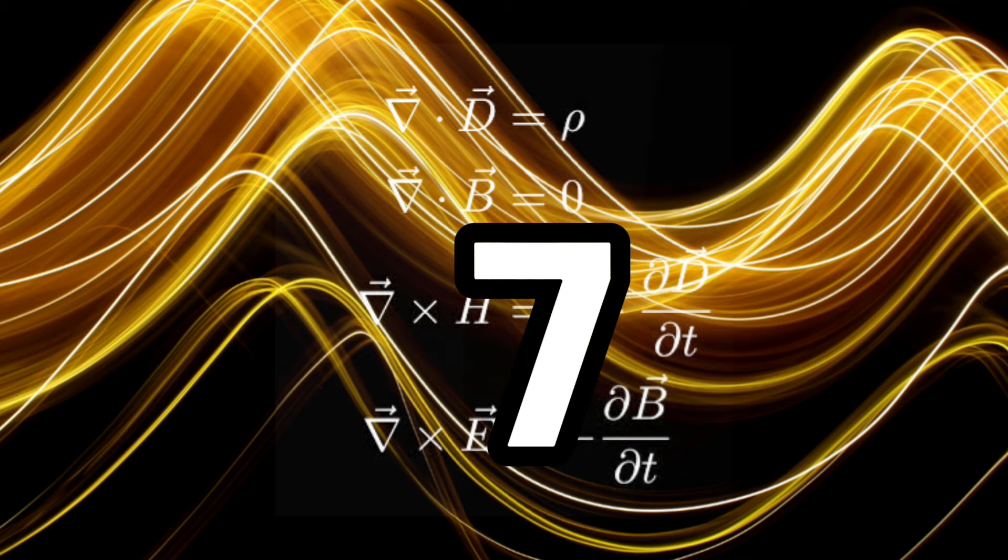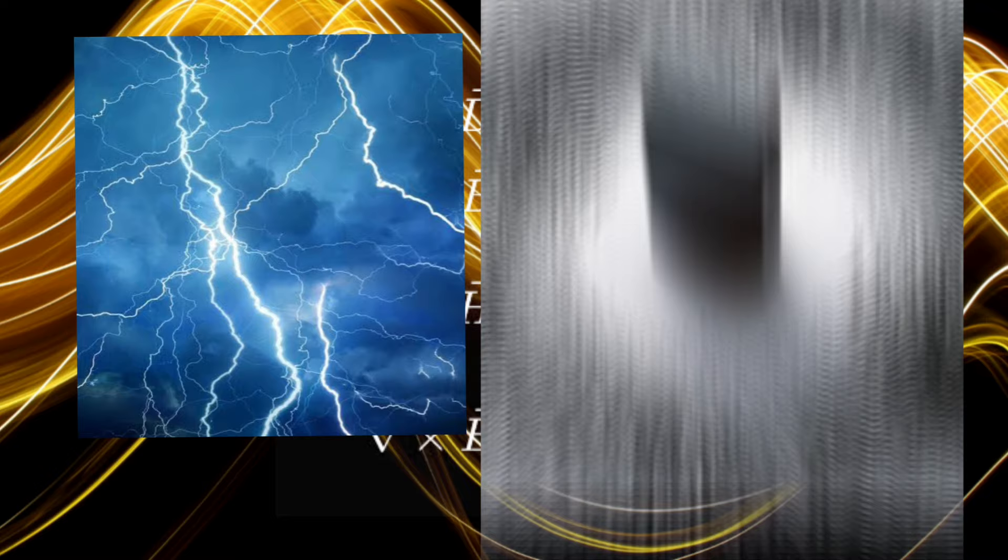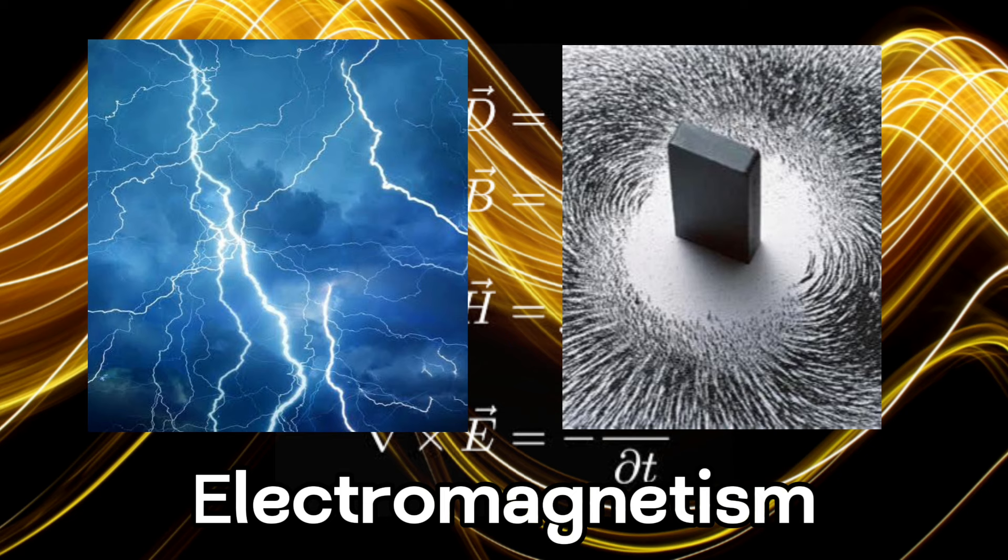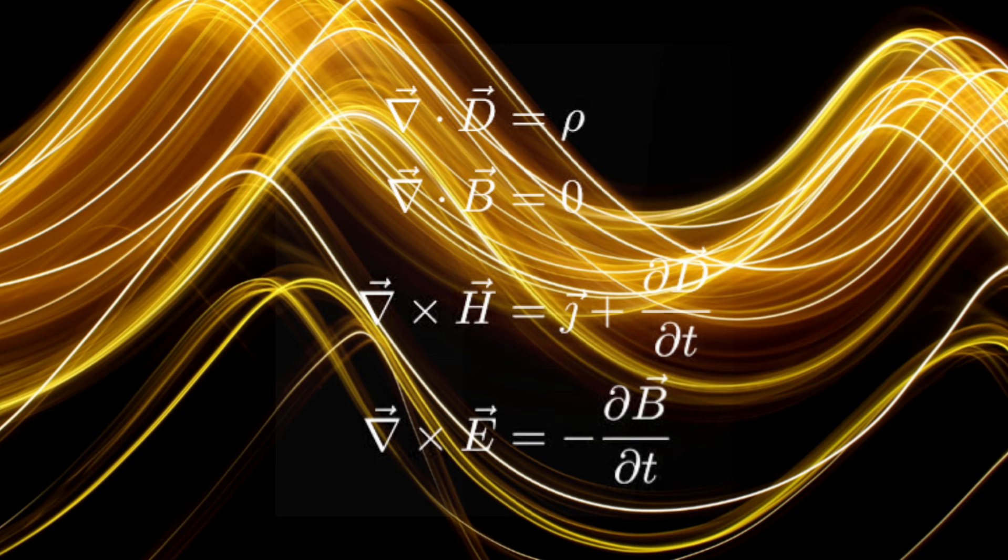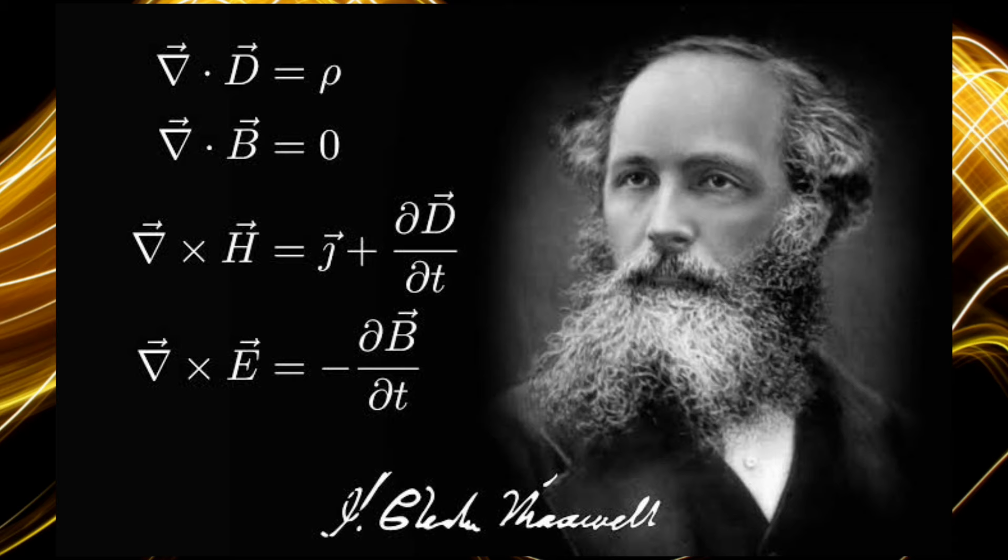7. Maxwell's Equations. Maxwell's most famous achievement was the unification of electricity and magnetism through his set of equations, now known as Maxwell's equations. He formalized the laws of electromagnetism into a coherent mathematical framework, predicting the existence of electromagnetic waves that propagate at the speed of light. This unification marked a profound shift in our understanding of nature, setting the stage for the development of modern physics and technologies.